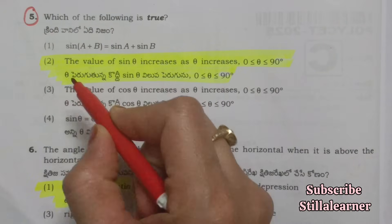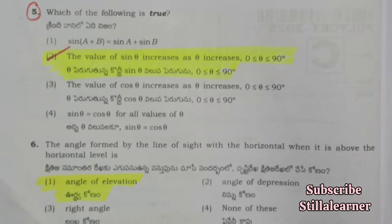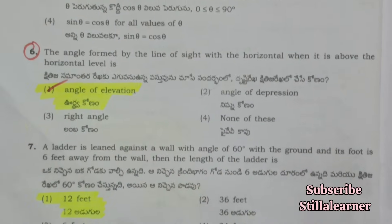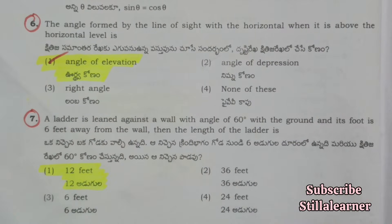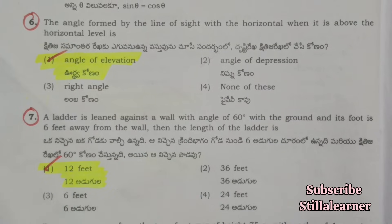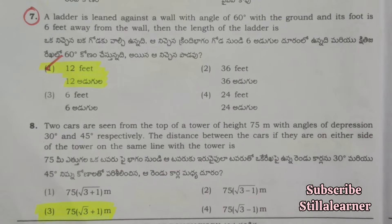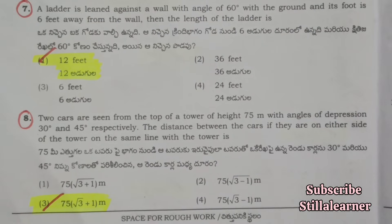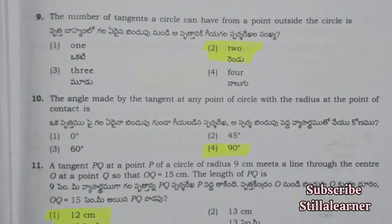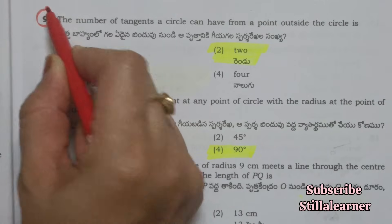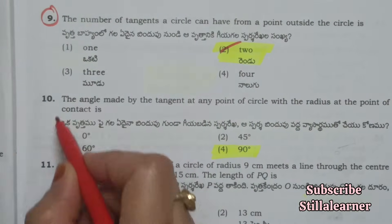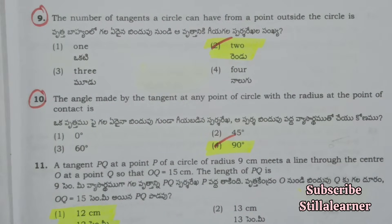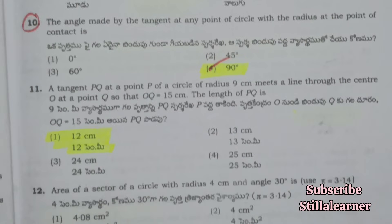Fifth question: which of the following is true? Answer is B — the value of sin theta increases as theta increases, that is 0 less than or equal to theta less than or equal to 90. Sixth one is A. Seventh one is also A. Eighth question answer is C. Ninth question answer is B, which is 2. Tenth one is D, that is 90 degrees. Eleventh question answer is A.